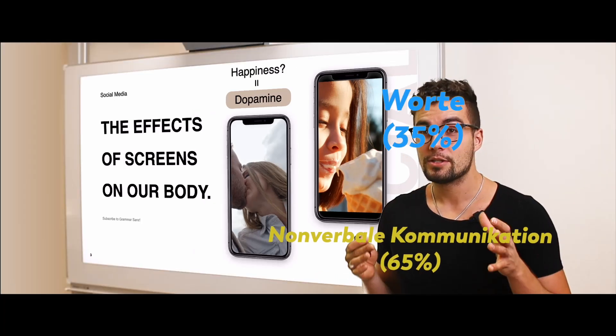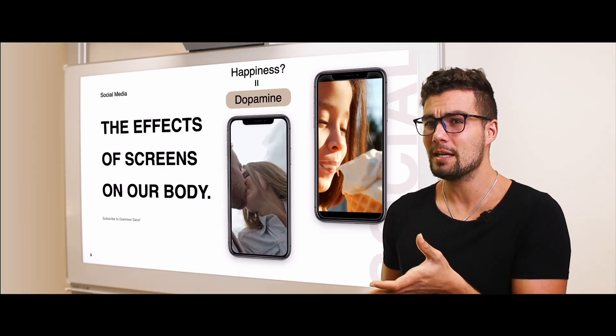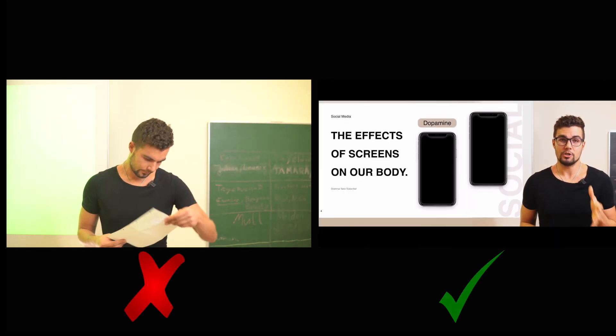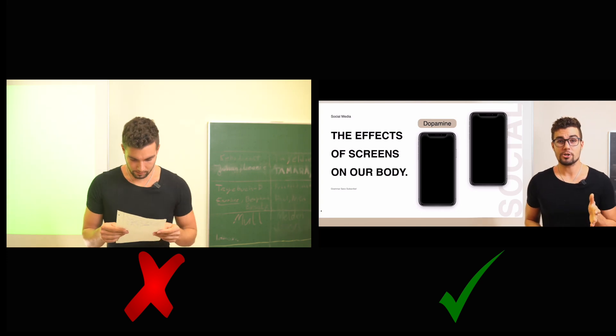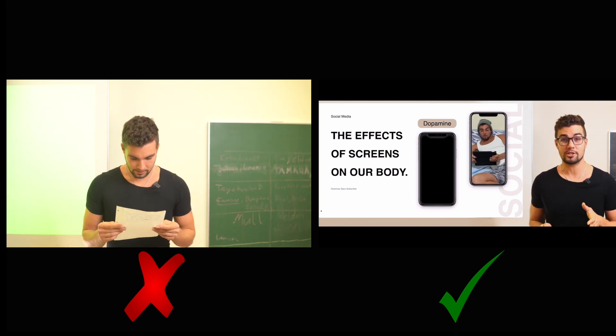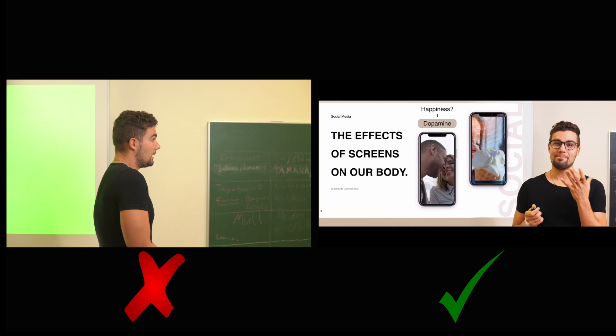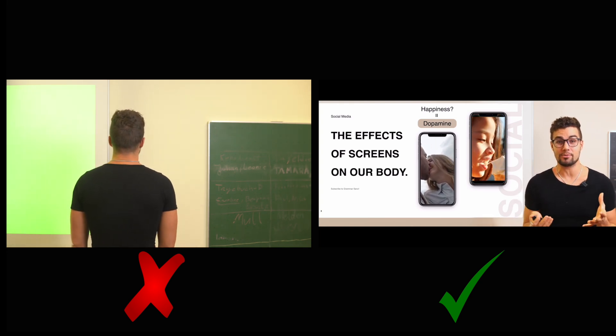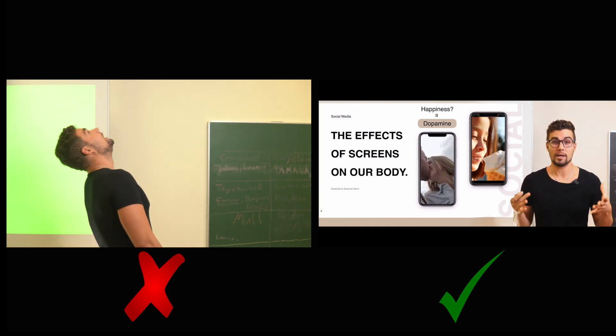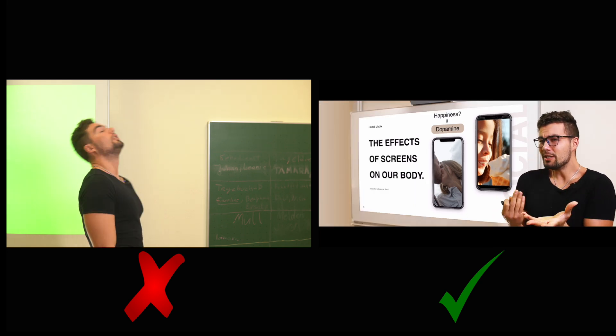Deshalb ist es sehr wichtig, dass du die folgenden Tipps beachtest. Zeige dein Interesse an dem Thema. Zeige mit deinem Körper Aufregung und Interesse, so als würdest du deinem Freund eine gute Nachricht mitteilen. Wenn dein Körper zeigt, dass du von dem Thema fasziniert bist, werden auch die Zuhörer Interesse zeigen. Spreche und schaue dabei die Zuhörer an. Schaue nicht auf den Boden, an die Decke oder hinter dich. Wenn du nervös bist, schaue etwas über oder unter die Augen, zum Beispiel auf die Stirn, die Haare oder das Kinn.